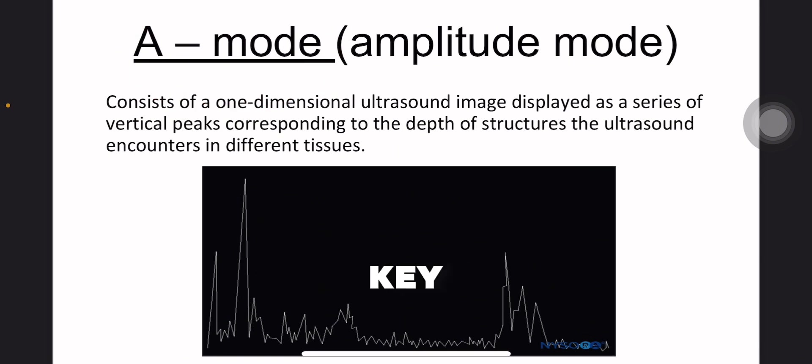So what is the key characteristic of A-mode? It is a one-dimensional image meaning it shows information along a single line of the ultrasound beam, and this information is presented as a series of vertical spikes or peaks.